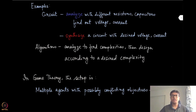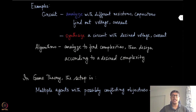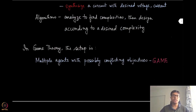Game theory is defined as the theory where there are multiple individuals — whom we call agents or players — who have potentially conflicting interests with each other, and we are trying to give a kind of predictive guarantee. The important part is that these multiple individuals have conflicting objectives.